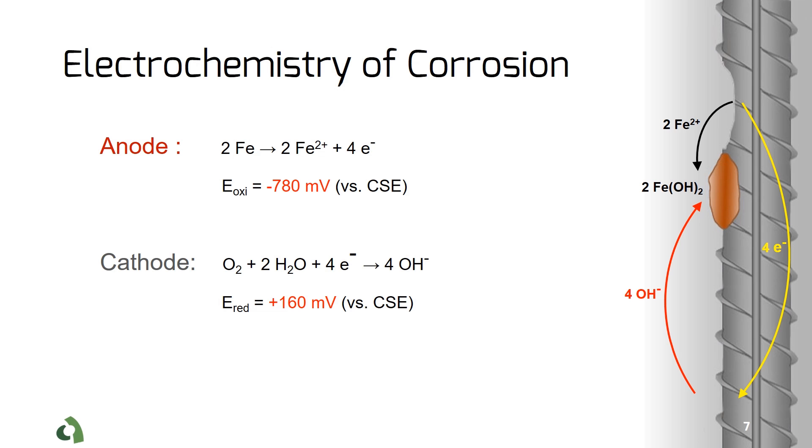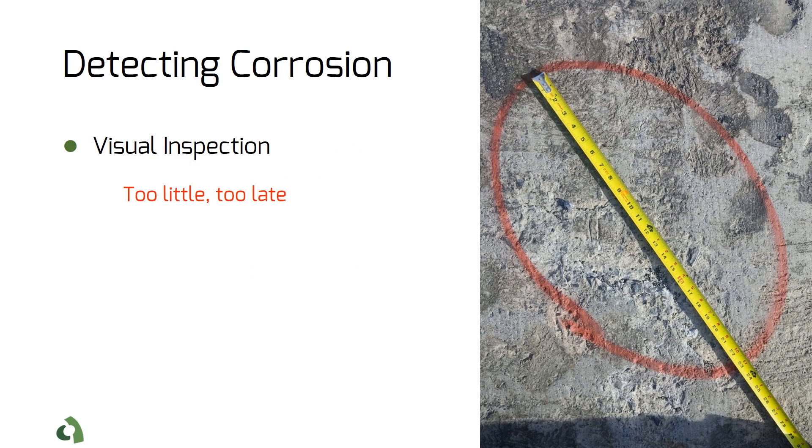The traditional way of investigating corrosion is visual inspection. However, when damage is detected in visual inspection, it is already too late.